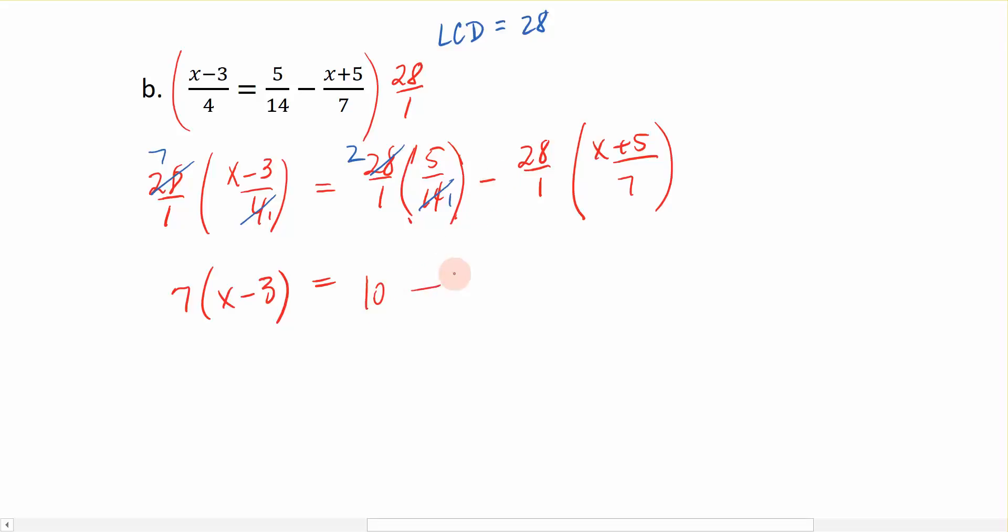Bring my minus sign down, and then you can see 7 divides into 28 four times, so I have 4 times x plus 5. So I went from this equation here, which has all these nasty fractions in it, to this equation here, which is all whole numbers. And it's much easier for me to solve.